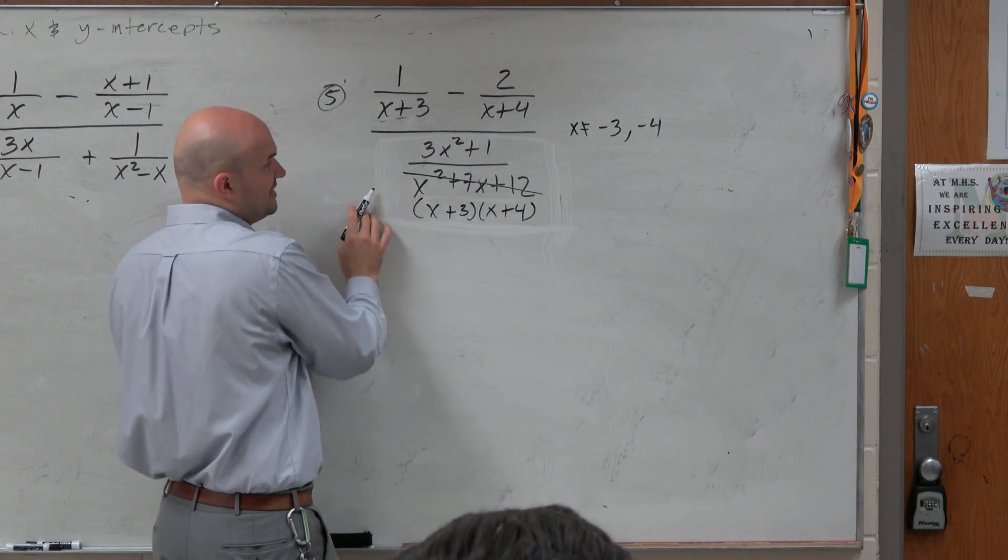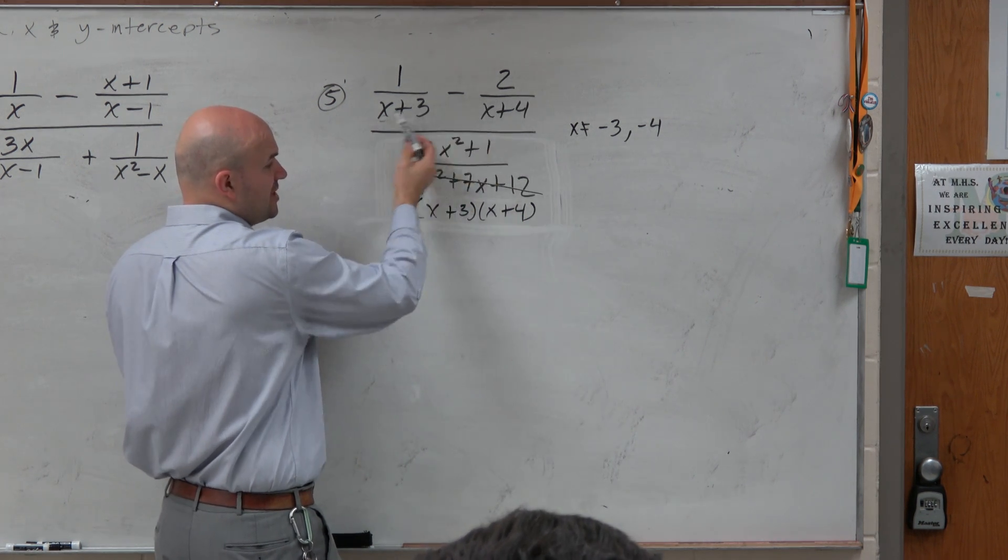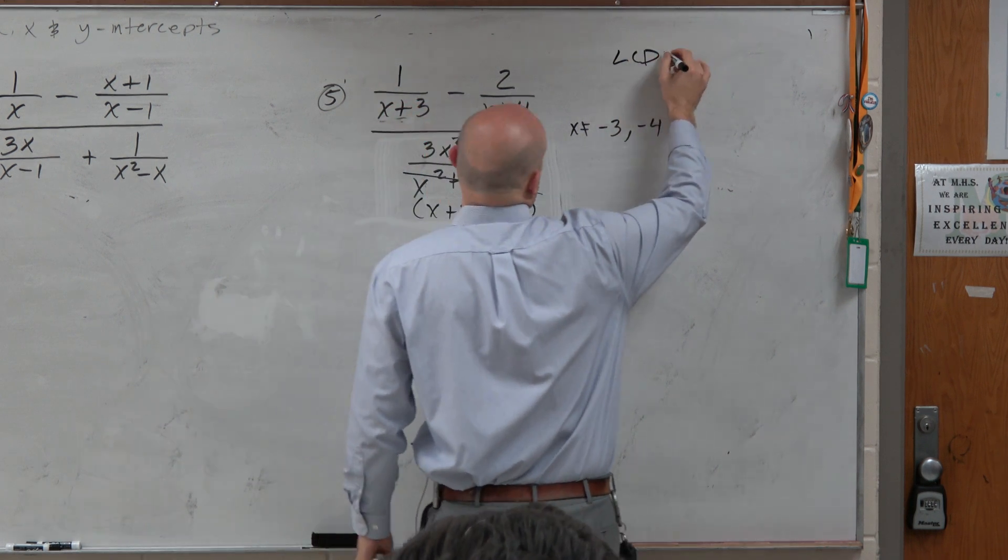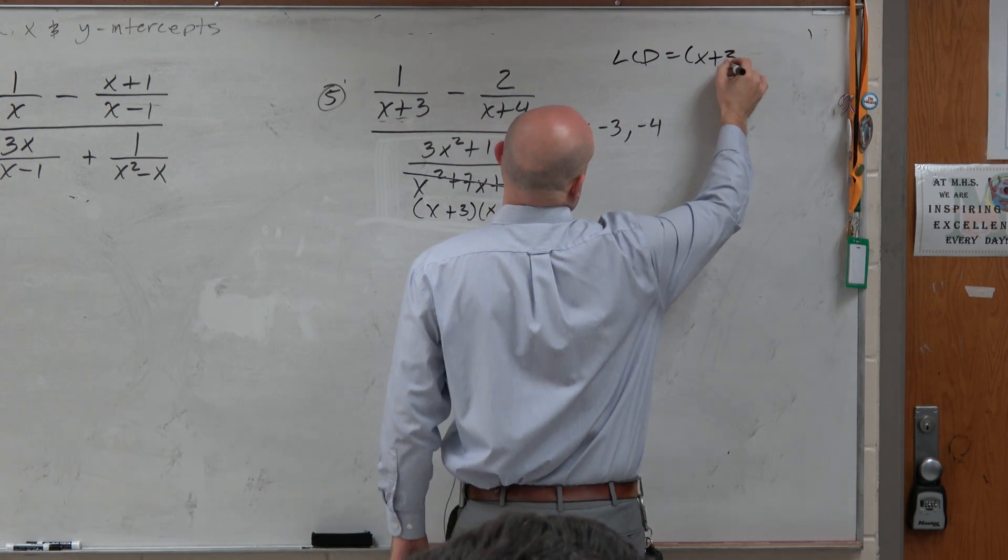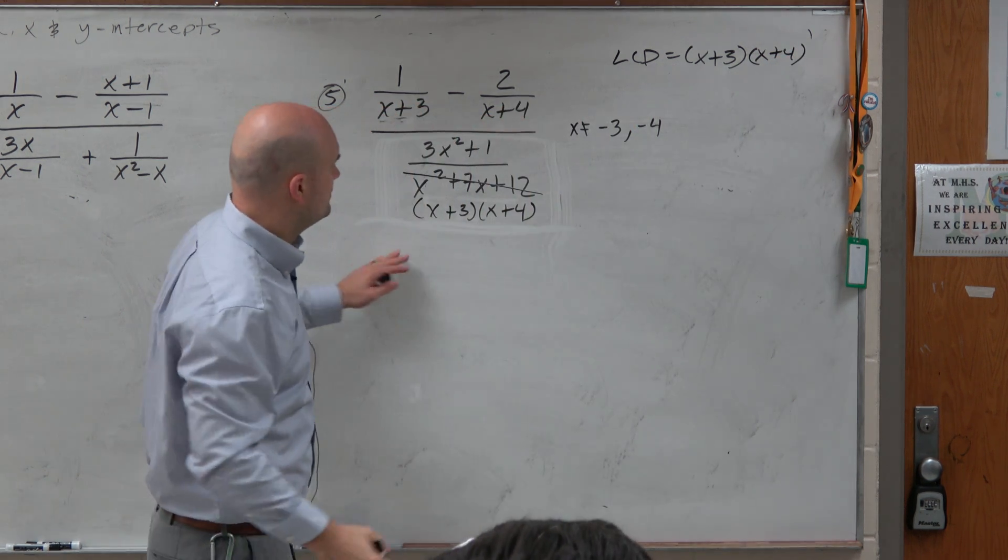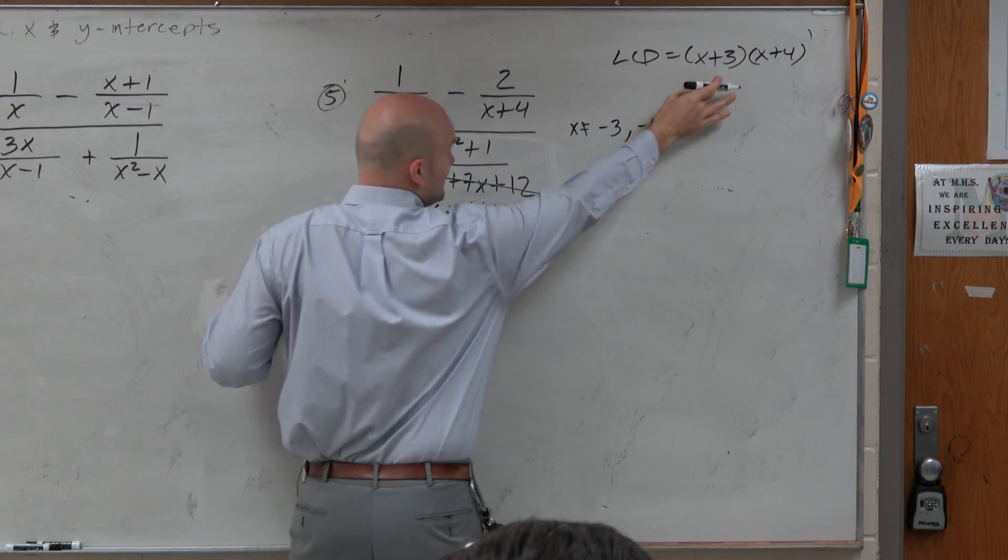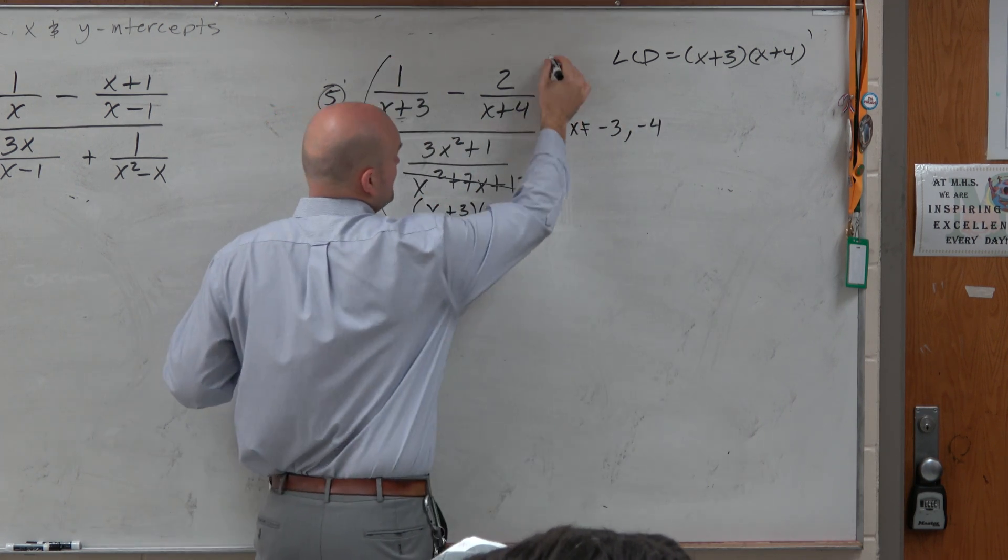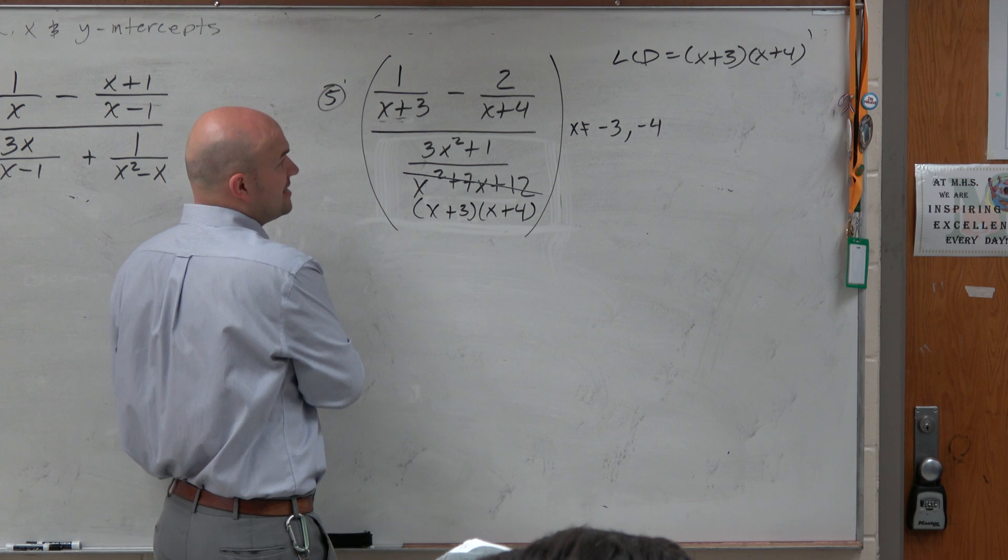So we identify the LCD is basically just going to be the product of two denominators, x plus 3 and x plus 4. Because obviously this divides into that, and these two both do add to that. So as I multiply everything times the LCD,